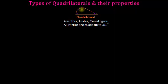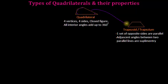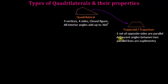In a quadrilateral, if we make one set of opposite sides parallel, we get a trapezoid or trapezium. This trapezium inherits all the properties of a quadrilateral — four sides, four vertices, a closed figure, and the sum of all interior angles is 360 degrees — but it has one set of opposite sides parallel, and the adjacent angles between the two parallel sides are supplementary, meaning each pair sums to 180 degrees.